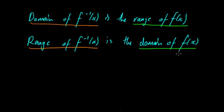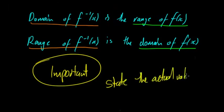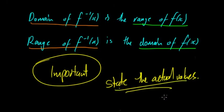However, it's important that in a question you state the actual values, even if you use this method to calculate it. So if they say find the range of the inverse, even if you just use the domain of f(x), you still have to state what it is. You can't just say the range of f⁻¹(x) equals the domain of f(x) — you also have to state the actual values, unless the question is general and doesn't have an actual equation.